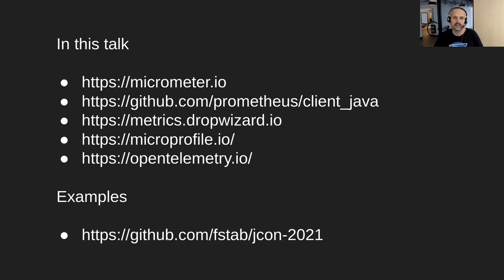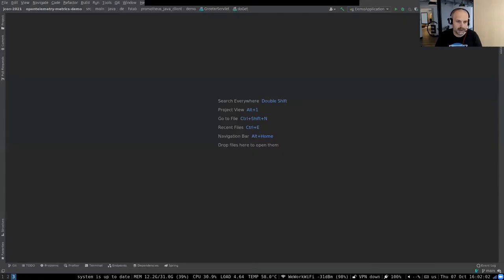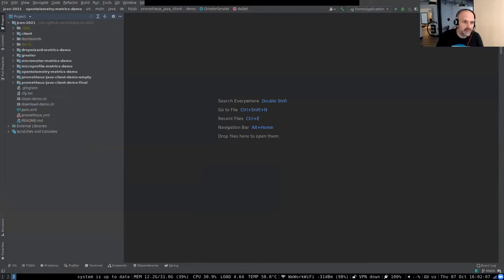If you want to try this code at home, I just published everything on GitHub — pushed it to my GitHub in the jcon 2021 repository. So everything I'm going to show you now you'll find there. As an example application I created a little REST service.